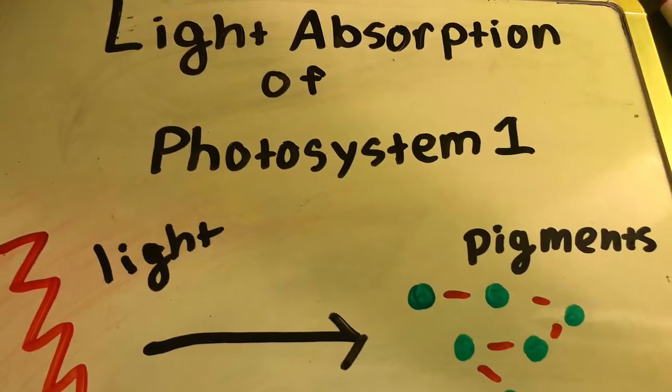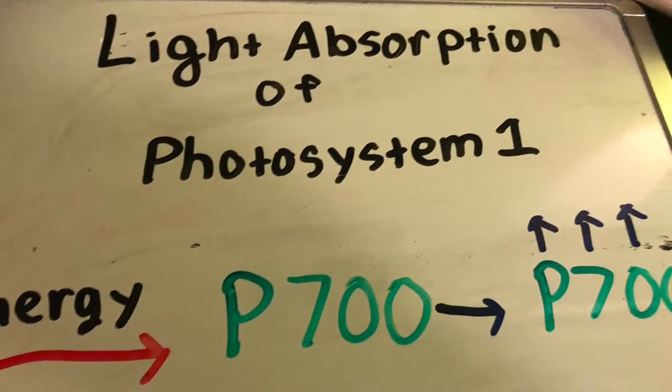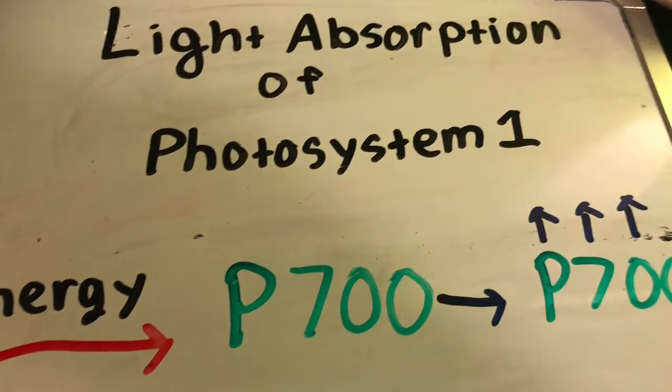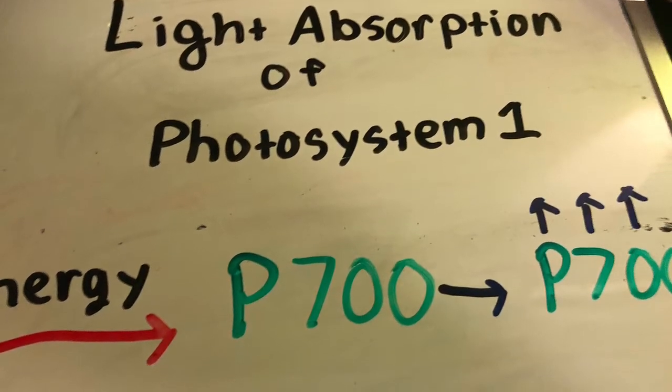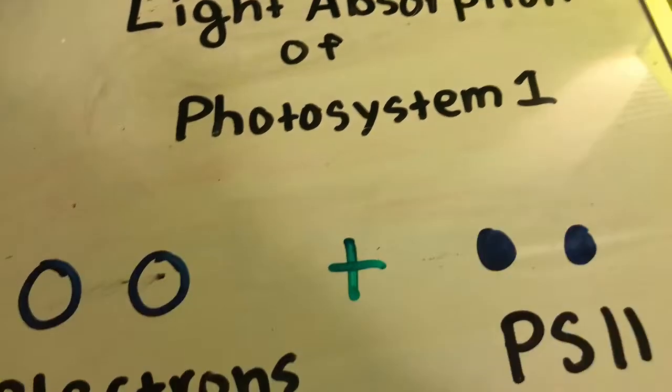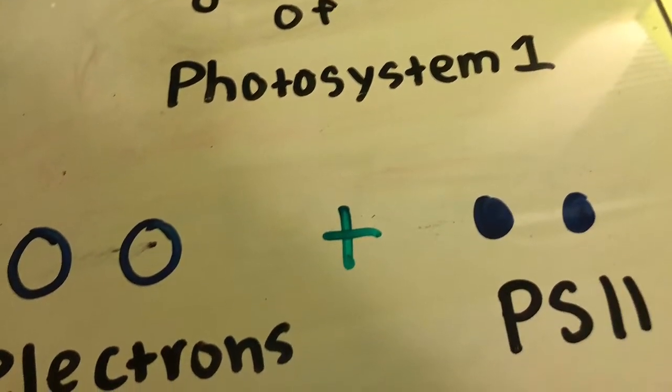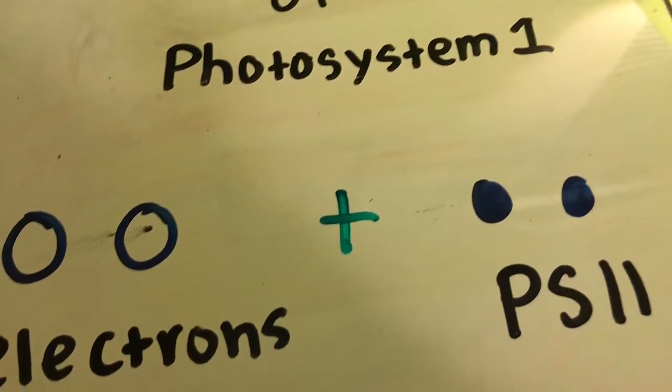When the light energy is absorbed by pigments and passed inward to the reaction center, the P700 is boosted to a very high energy level instead of the P680, which is transferred by an acceptor molecule. Then the special pairs that were missing are replaced by the new electron from photosystem II.